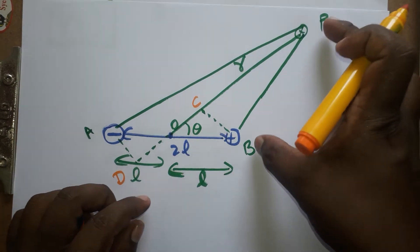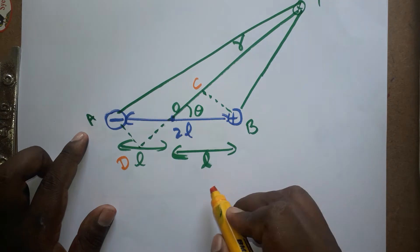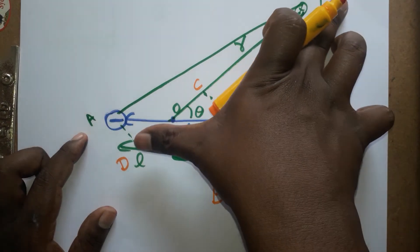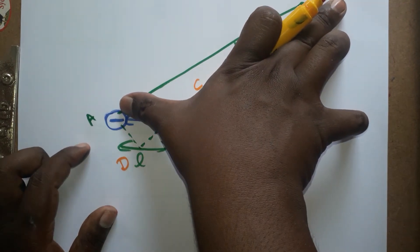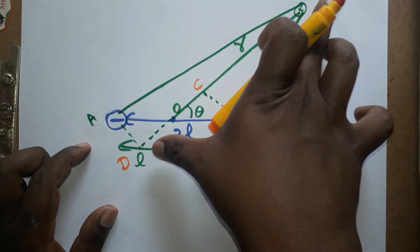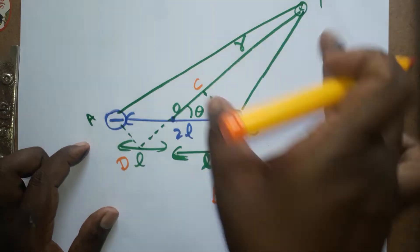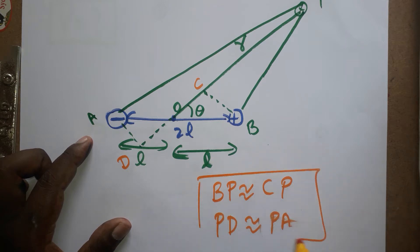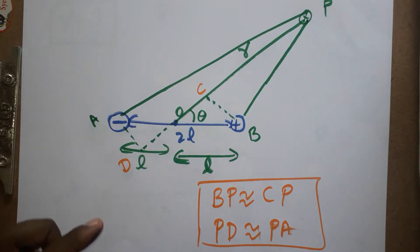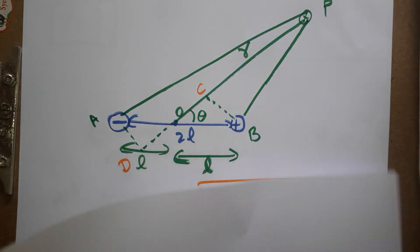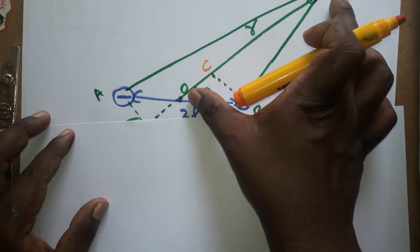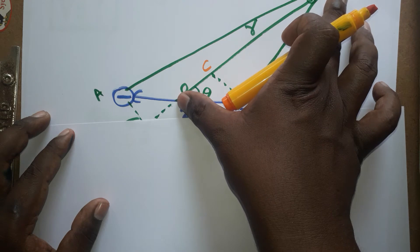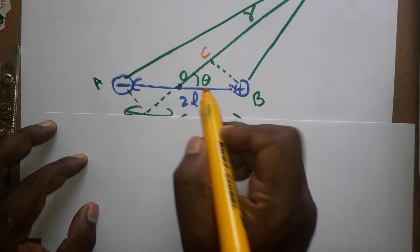BP is approximately equal to CP, and PD is approximately equal to PA. These two are considered equal because we drew a perpendicular line. The distance OP is taken as r. This distance from center is taken as l.